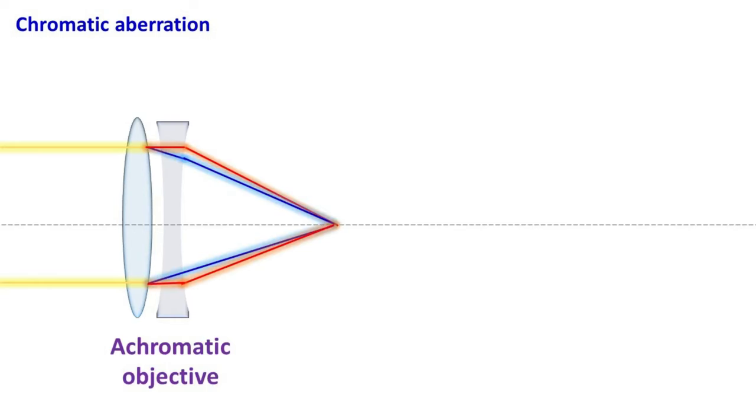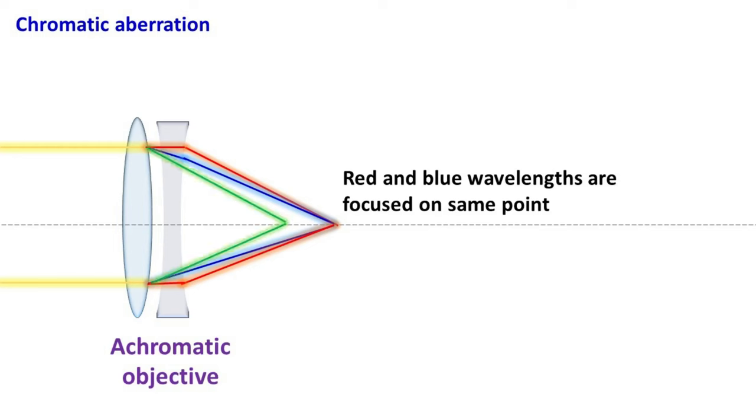Achromatic Objective. The objective lens which focuses red and blue wavelengths on the same point is called achromatic objective. Your green wavelength remains out of focus.